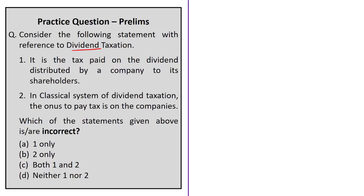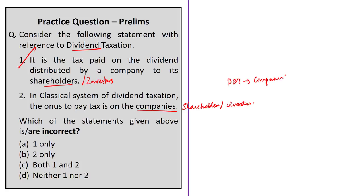The second question is on dividend taxation. You need to choose the incorrect statements. Statement one says dividend taxation is the tax paid on dividend distributed by a company to its shareholders — this is correct. Statement two says that in the classical system of dividend taxation, the onus to pay taxes is on the companies — this is incorrect. In the classical system, the onus is on the shareholders or investors, not on the companies. Under the Dividend Distribution Tax system, the onus is on the companies. The correct answer is option B: 2 only, since it asks for the incorrect statement.